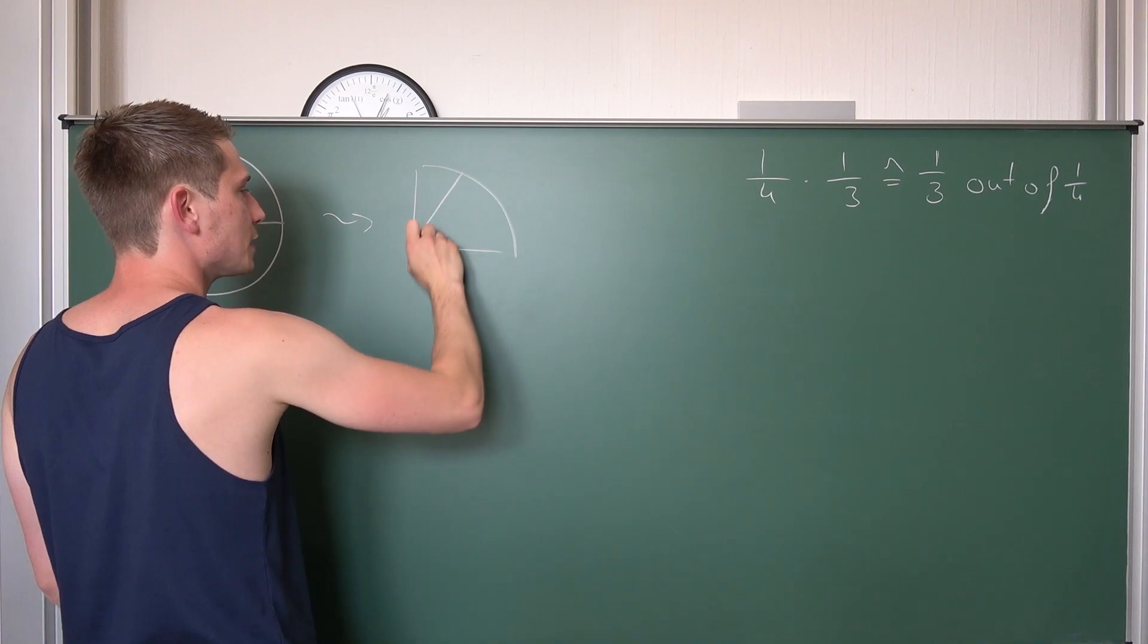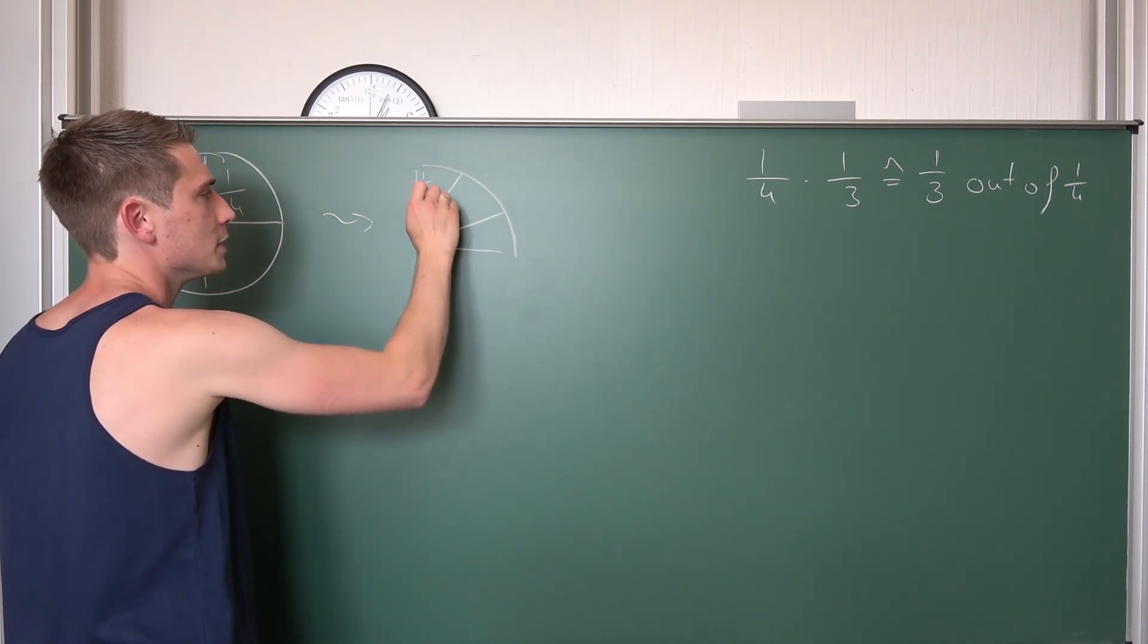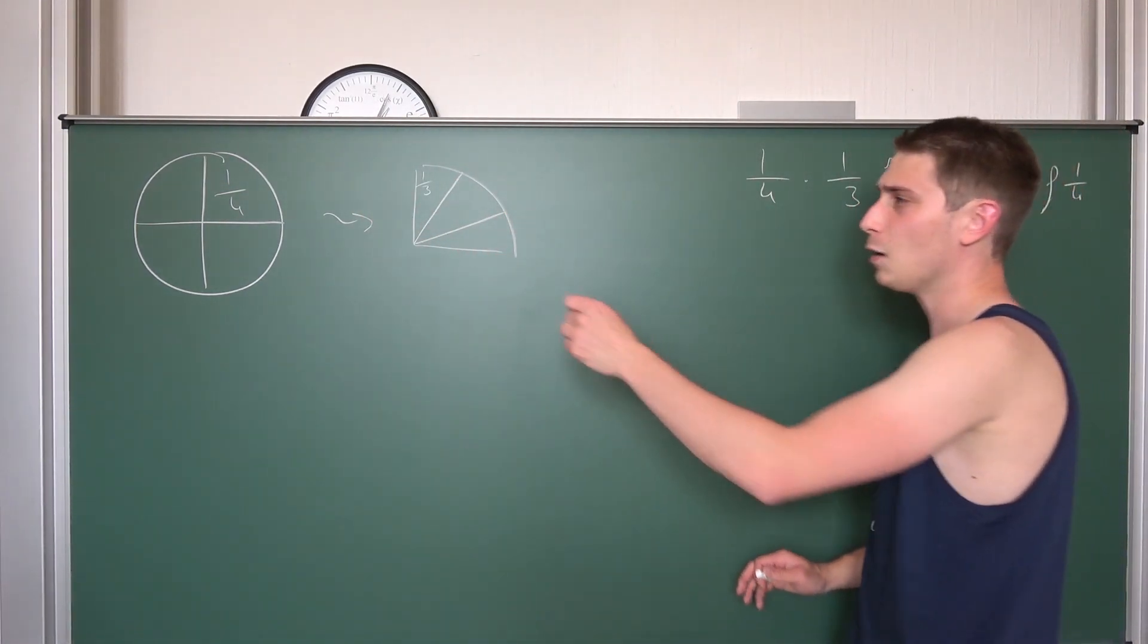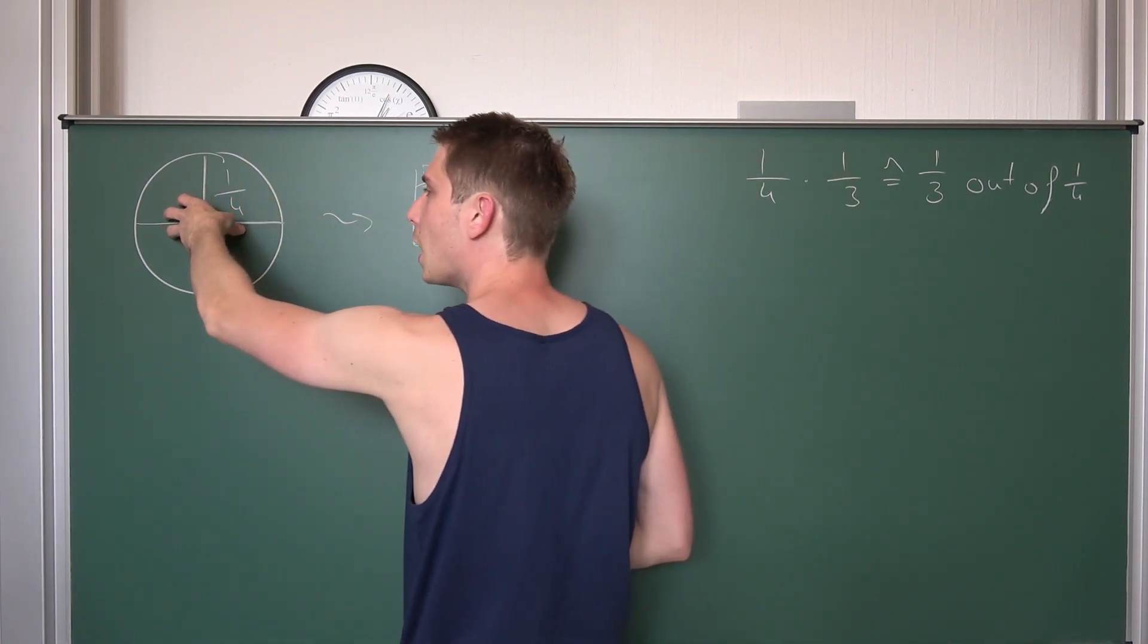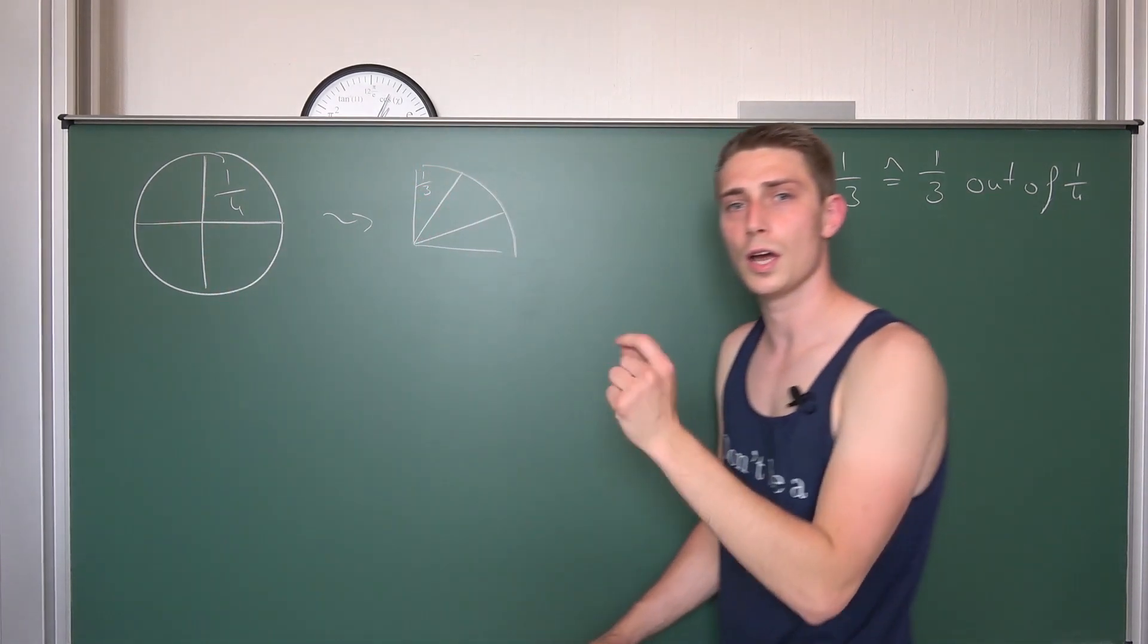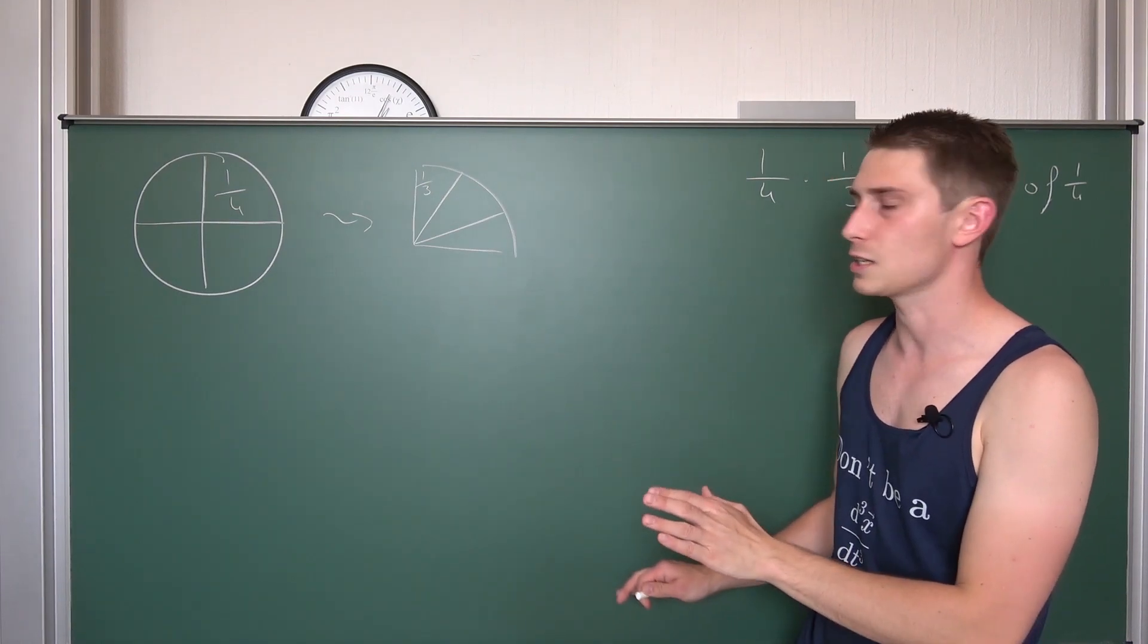Meaning we are just going to divide it up into thirds, obviously. Meaning this up here is a third, a third out of one quarter. And now we are going to translate this one third out of one quarter into how often does the third of a quarter fit into a whole cake? Into one whole cake. It's as easy as it is.